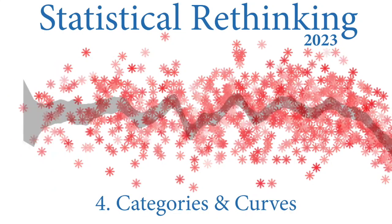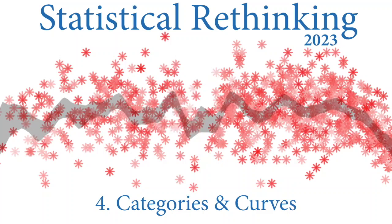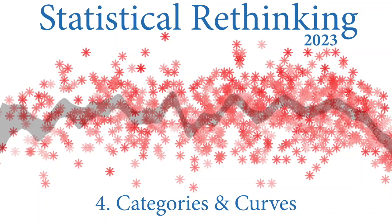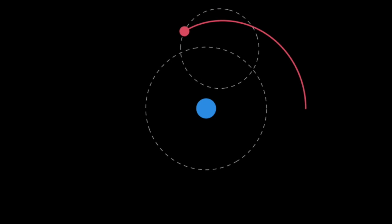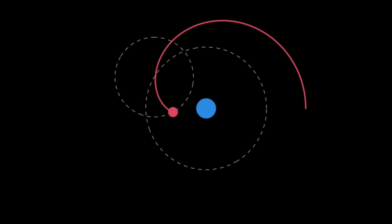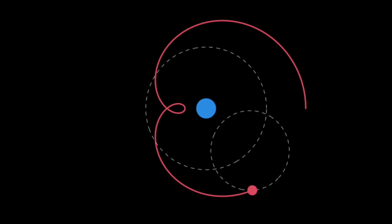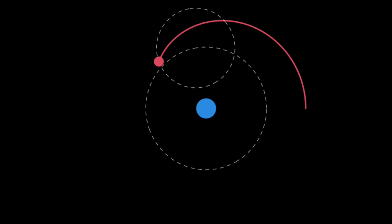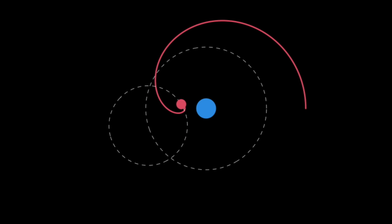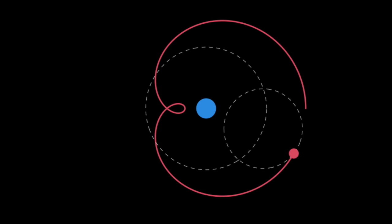Welcome to the fourth lecture of Statistical Rethinking 2023. We're going to continue with the theme from the previous lecture where we started learning about linear regression as a way to estimate the associations we need to address our scientific questions. I introduced the geocentric model as a metaphor for linear regression — it is fantastically wrong in its structure, but fantastically successful and accurate in doing its job, which is to predict where Mars is in the night sky.